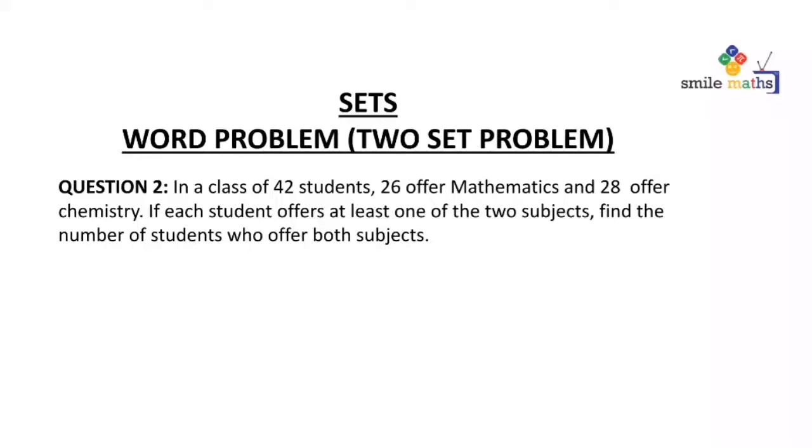Mostly, in a statement like 'if each student offers at least one of the two subjects', this should tell you that there is going to be intersection. So we are asked to find the number of students who offer both subjects. For our universal set U, we say number of elements in U is 42.